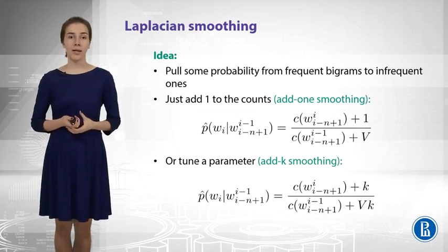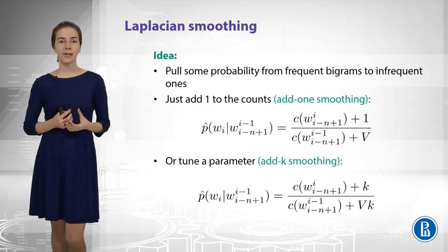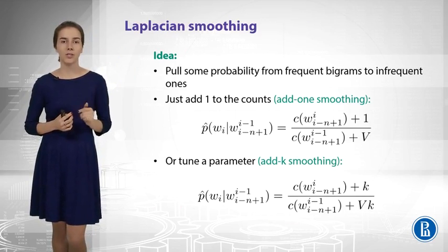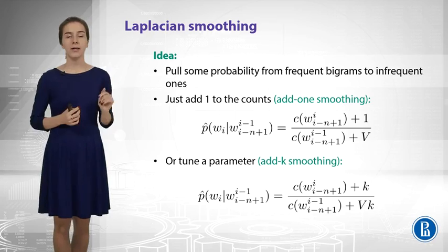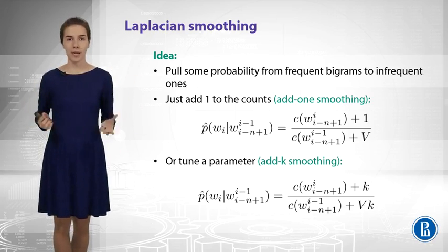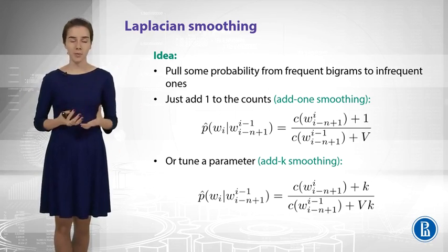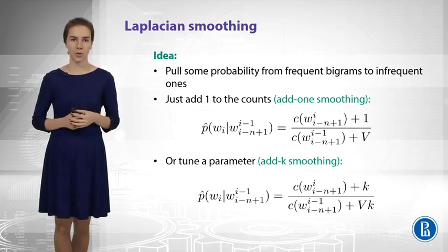Instead, we can do another simple thing. We can add one to all the counts, even those that are not zeros. And then we will add V, the number of words in our vocabulary, to the denominator. In this way, we will get a correct probability distribution, and it will have no zeros.